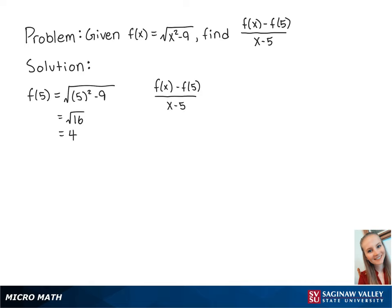Next, we're going to plug in our value for f of 5 so that we have the square root of x squared minus 9 minus 4 over x minus 5.